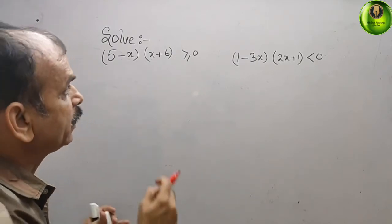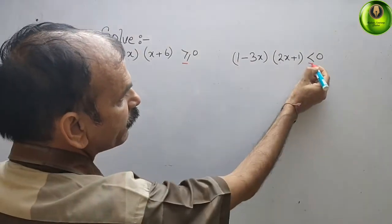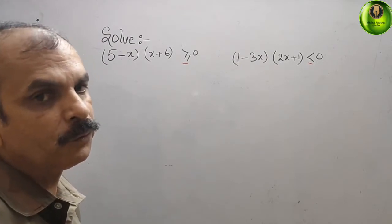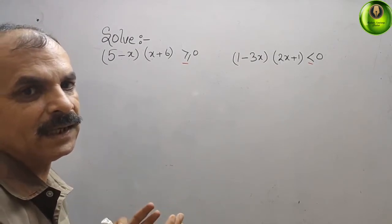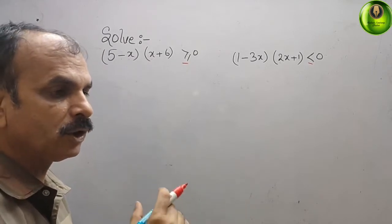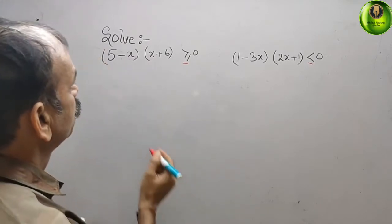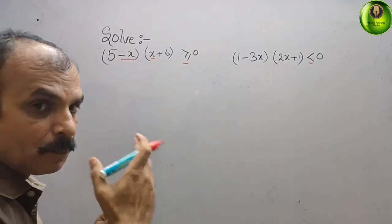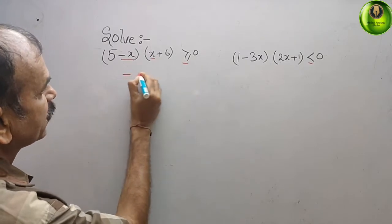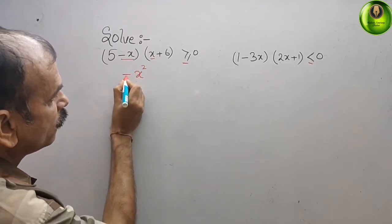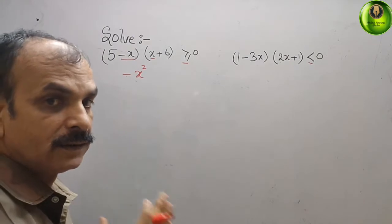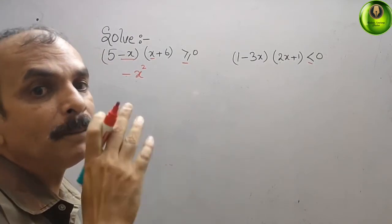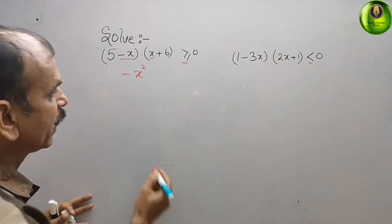First, we have to find — you can see this is an inequality sign. In inequalities, we first assess whether the quadratic equation is positive or negative. You can see here minus x times x gives minus x squared. The sign is minus, which means we will get a maximum point — a downward-opening parabola.